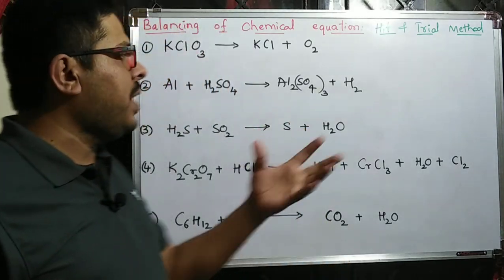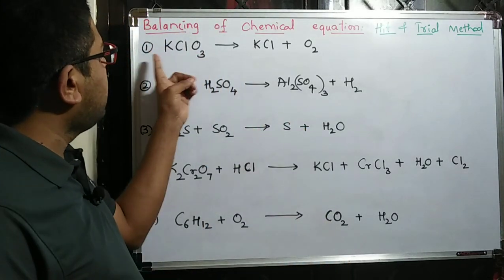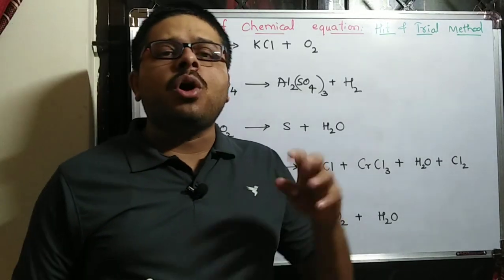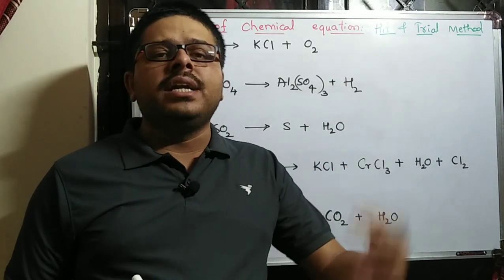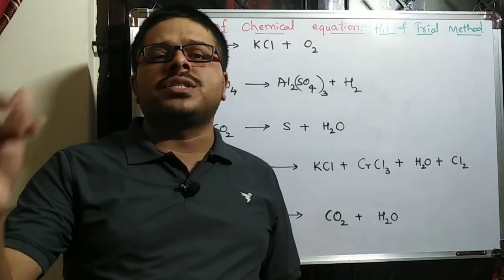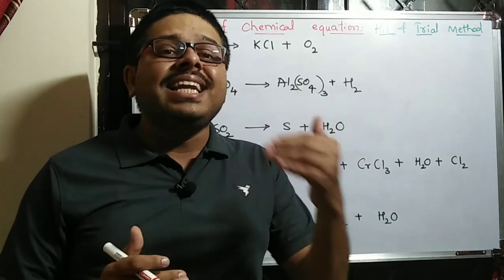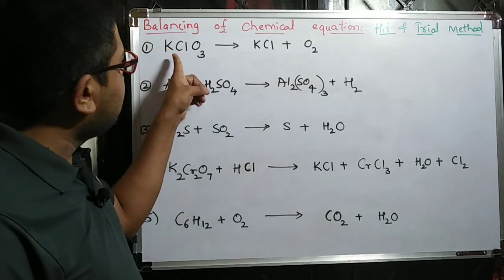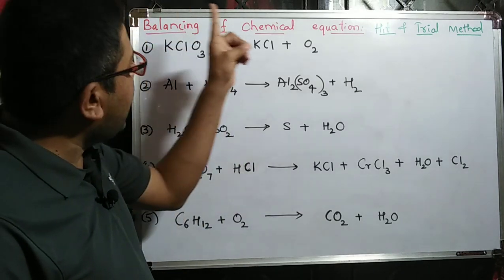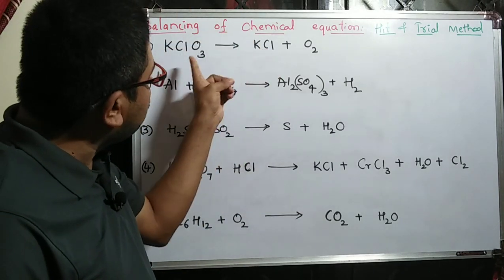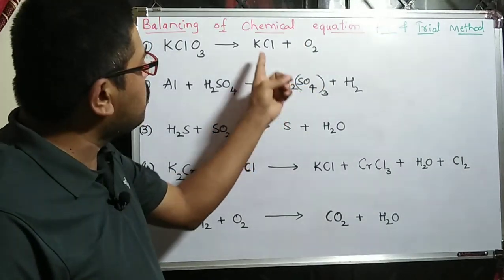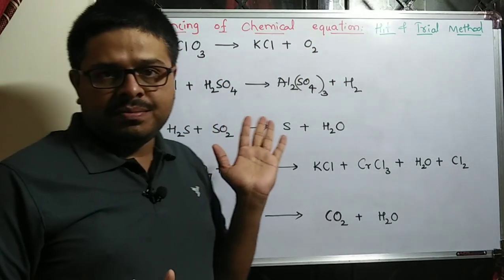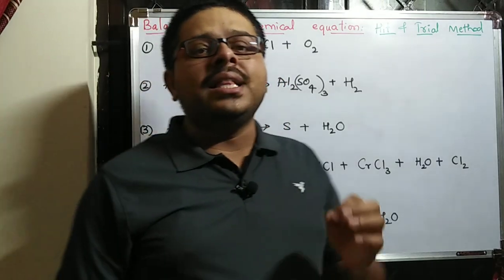For example, take potassium chlorate. Potassium chlorate on heating forms potassium chloride and oxygen gas is released. So we write KClO3 on heating decomposes to KCl and O2. You have written the reaction, but the reaction is not balanced.